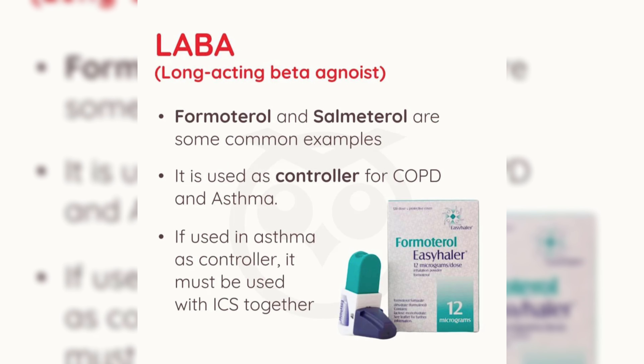Long-acting beta agonist, LABA. Formoterol and salmeterol are some common examples. It is used as a controller for chronic obstructive pulmonary disease and asthma. If used in asthma as a controller, it must be used with ICS together.